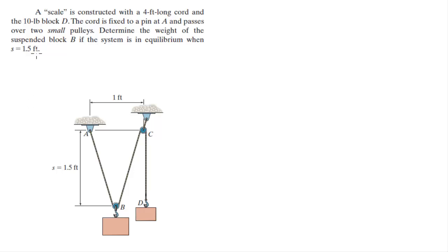let's do this somewhat confusing problem that says a scale is constructed with a 4 foot long cord and a 10 pound block D. The cord is fixed to a pin A and passes over two small pulleys. Find the weight of the suspended block B if the system is in equilibrium when S is equal to 1.5 feet. Now you'd be inclined to think that S is showing you in the diagram that it's the height of this triangle with two sides that are equal.